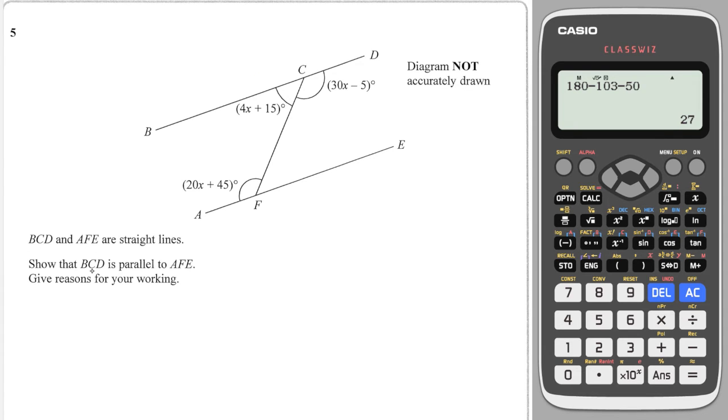Here is a tricky question. It says that these two are straight lines. And it says show that these two lines are parallel. Give reasons for your working. So the first thing I'll notice there, because BCD is a straight line, then we know that the angles along that straight line must add to 180. So I can say that 4x plus 15 plus 30x minus 5 must equal 180. And I can write, because angles on a straight line add to 180.